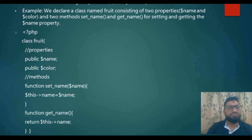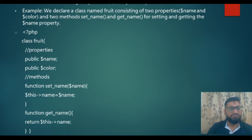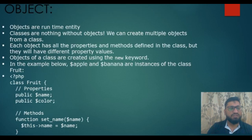In this class, we have defined two functions: function set_name with the argument $name, and the second one, function get_name without any argument. In the function set_name, we have used the $this variable which is referencing to the name variable.